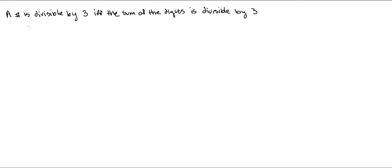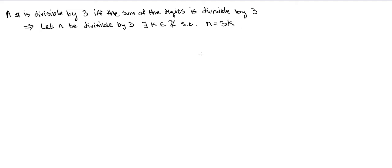The way we're going to do this is we're going to prove the first direction. We're going to suppose that a number is divisible by 3, and using that assumption, we're going to show that the sum of the digits is also divisible by 3. So we let n be a number that is divisible by 3, meaning there exists an integer k such that n equals 3k.